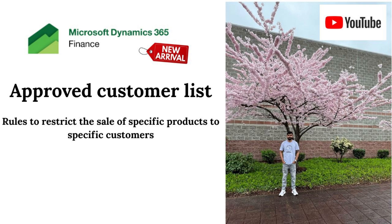In this demonstration, I will be showcasing another valuable feature introduced by the Microsoft team in Dynamics 365 Finance and Operations, named the Approved Customer List. This functionality enables administrators to configure rules that restrict the sale of certain products to specific customers. Before we dive into this product demo, I have prepared a presentation to help you understand the feature in more detail.